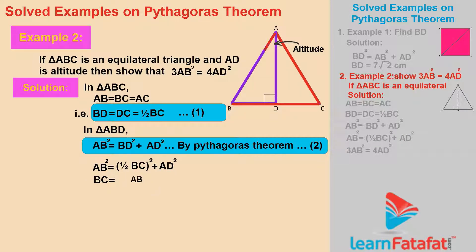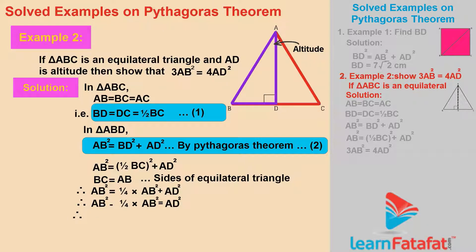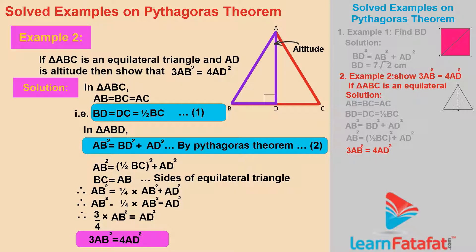But BC = AB, as sides of an equilateral triangle. Therefore AB² = (1/4) × AB² + AD². Therefore AB² − (1/4) × AB² = AD². Therefore (3/4) × AB² = AD². Hence 3AB² = 4AD².